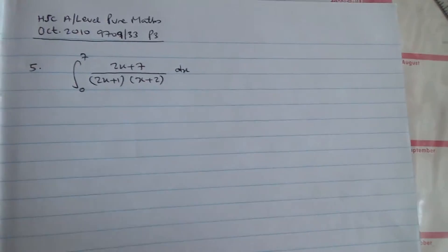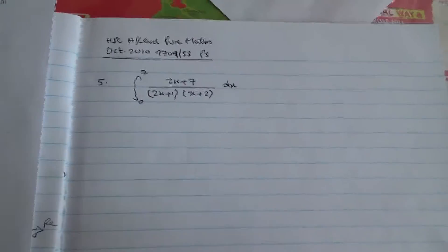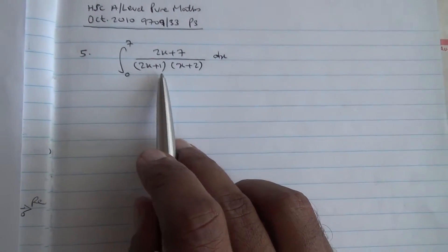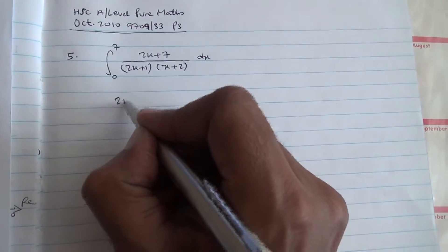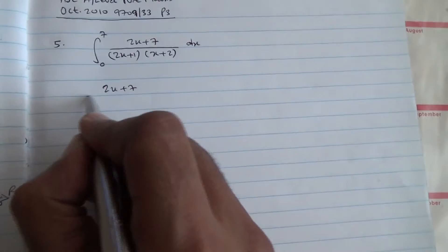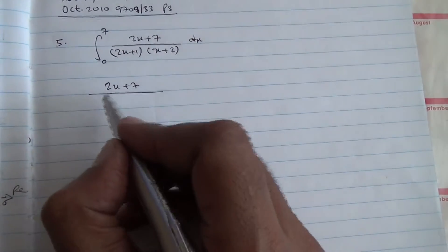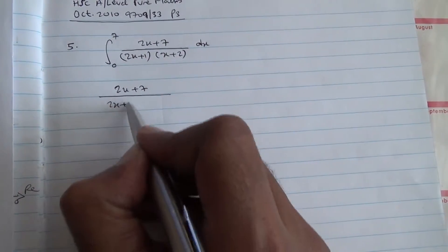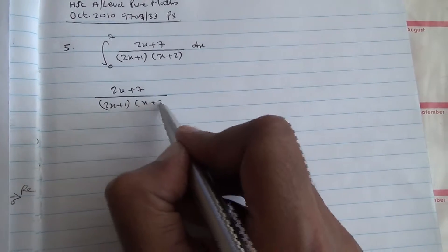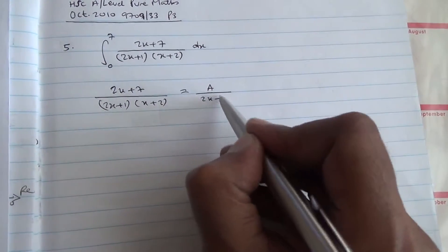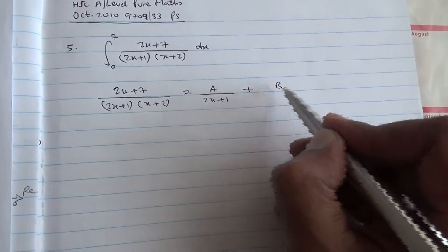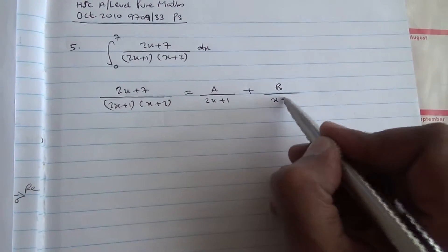Right, so let's do it. Now basically this is partial fraction. I'm sure you know what I mean by that, partial fraction here. And so let me just say 2x plus 7 all over 2x plus 1 times x plus 2 is equal to a over 2x plus 1 plus b over x plus 2.